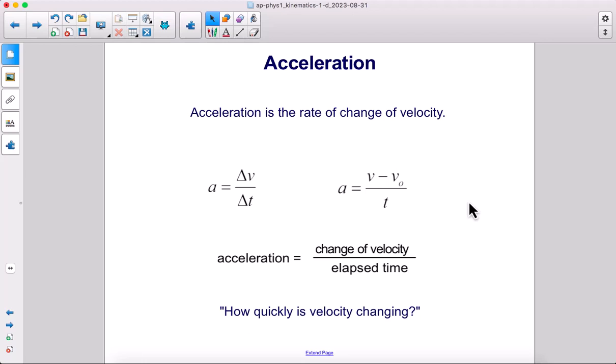Acceleration is the rate of change of velocity. So acceleration is change in velocity over change in time. If we assume that the initial time is just zero, that becomes change in velocity—final velocity minus initial velocity—divided by the final time, or the time span. You could also think of acceleration as how quickly velocity is changing.